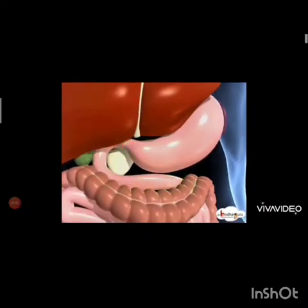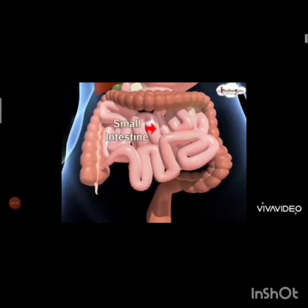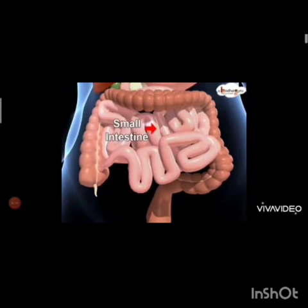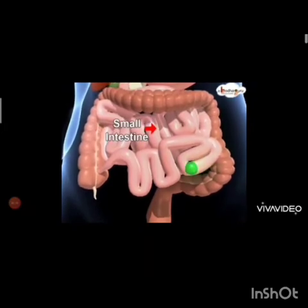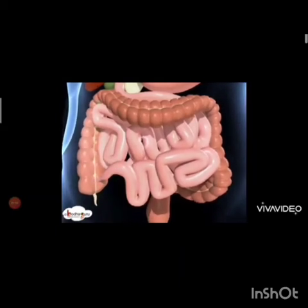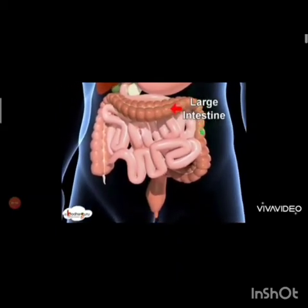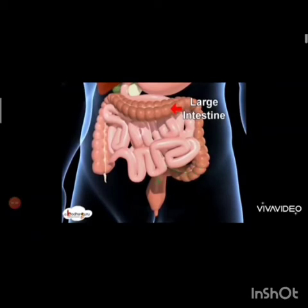From the stomach, food passes through a long tube called the small intestine, and then into a shorter but wider tube called the large intestine.